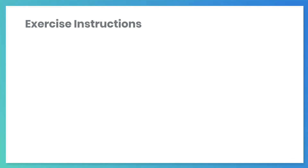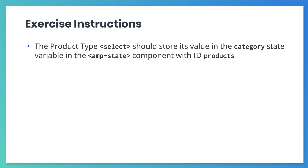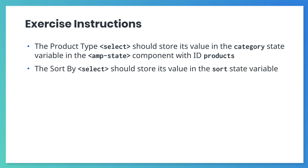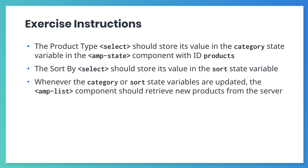During this exercise, you'll want to refer to the documentation for the amp-bind and amp-list components. Here are the requirements to build our product list. The product type select element should store its value in the category state variable in the AMP state component, which has products as its ID. The sort by select element should store its value in the sort state variable. Whenever the category or sort state variables are updated, the amp-list component should retrieve new products from the server. Use the query parameters category and sort to pass the filter and sort parameters to the server.